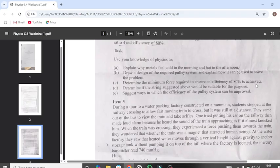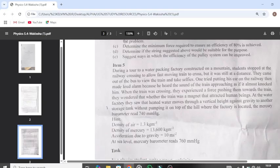Part D says determine if the string suggested above would be suitable for the purpose and suggest ways in which the efficiency of the pulley system can be improved. Remember, in this section we are to take one question. You have to pick one item.